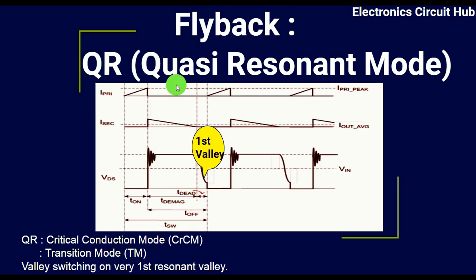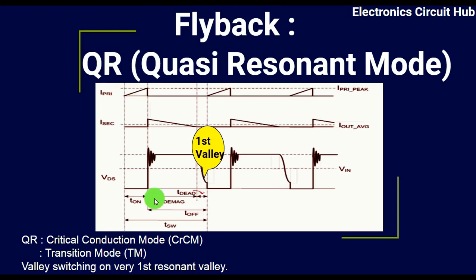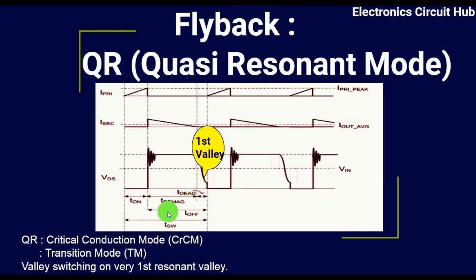Let us understand what happens in quasi resonant mode. You can see the drain-to-source voltage, the secondary current, and the primary current. There is the on-time, T_mag which is the magnetizing or demagnetizing time, and the dead time. The total off time is T_mag plus T_dead, and T_on plus T_off equals the switching period T.